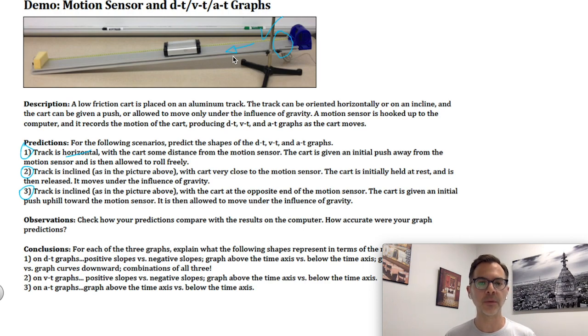Another thing you need to know about the motion sensor, when you move away from it, that's the positive direction for all of the position, velocity, and acceleration vectors. And if you move toward it, that's the negative direction as far as the vectors are concerned. So like I said, we're going to start over here by this check mark. We're going to move away with a push. Track is going to be flat, friction is low, and therefore you decide what the three graphs will look like.